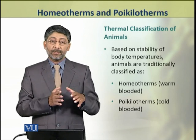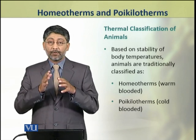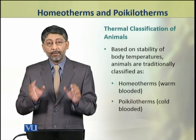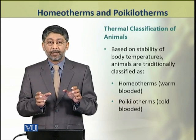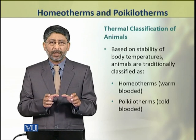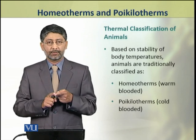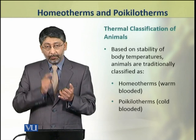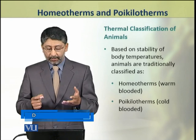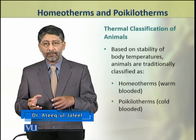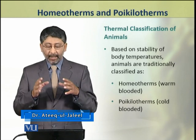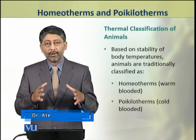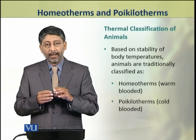Based on the stability of body temperatures of animals, the animals are traditionally classified into two groups: homeotherms, commonly known as warm-blooded animals, and poikilotherms, which are known as cold-blooded animals.